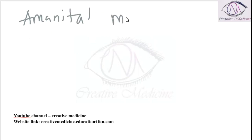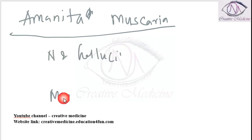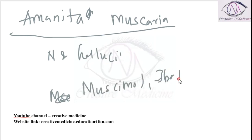Amanita muscaria is a mushroom, so ingestion of Amanita muscaria leads to mushroom poisoning. The symptoms mainly arise from the neurogenic and hallucinogenic properties of the active substances, which are muscimol, ibotenic acid, and other isoxazole derivatives.